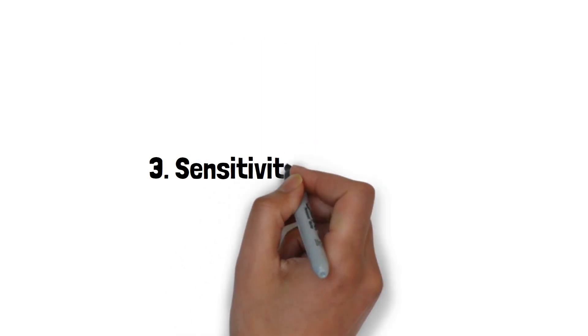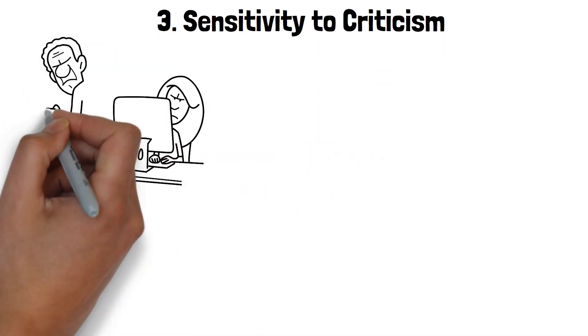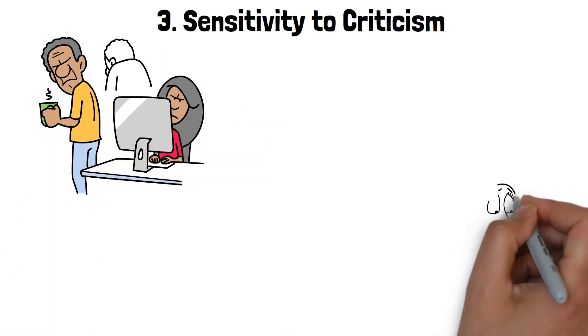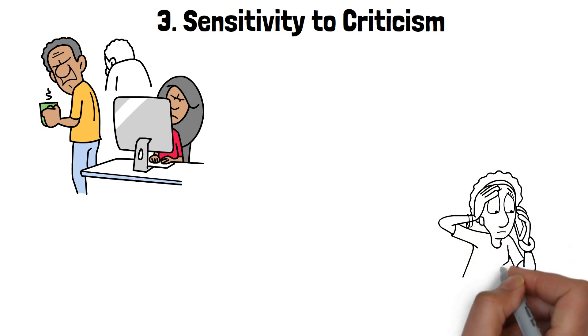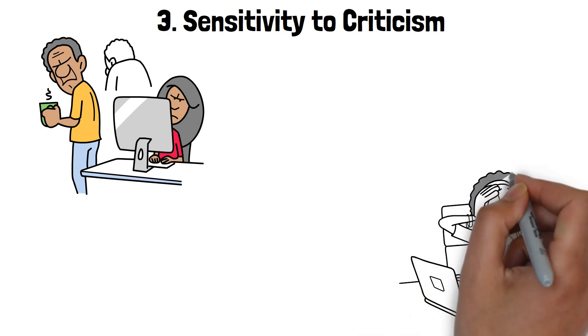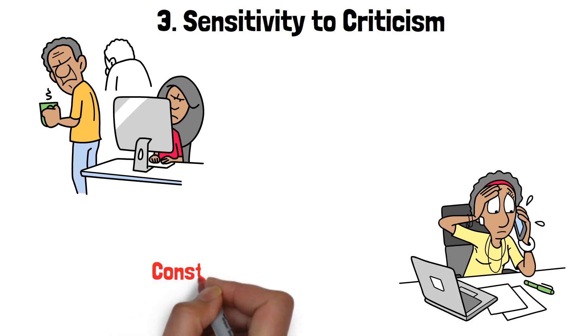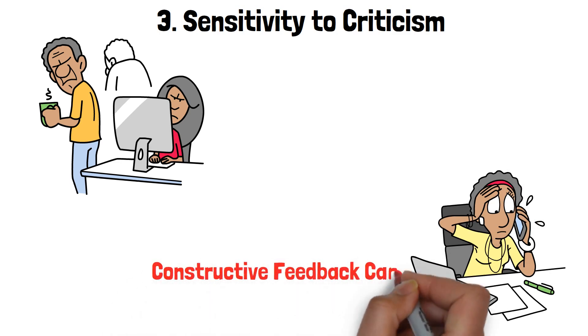3. Sensitivity to Criticism. Criticism is a double-edged sword when it comes to a narcissistic wife. While she might not hesitate to point out flaws in others, she's surprisingly fragile when it comes to receiving criticism herself. Even the most constructive feedback can lead to emotional turmoil.